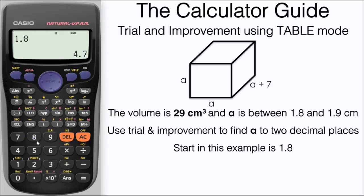Our start in this example is 1.8 and our end is 1.9 and our step is 0.01. I already have this in here from previous example so I'm just going to press equals and here we have our table.